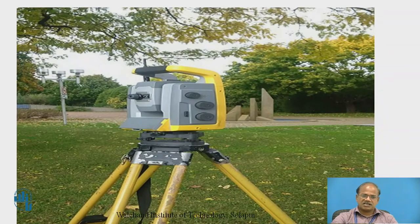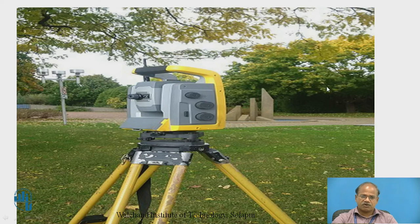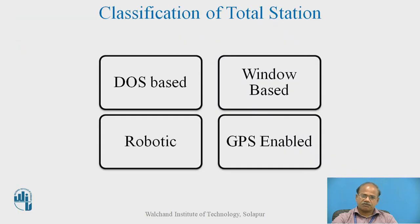This is one of the classical total stations in front of you — a Leica make instrument. As you can see, there is an eyepiece adjacent to which a focusing screw is also there, and from the opposite side there is transmission of the electromagnetic wave which is received back by the instrument. The rotation of this part is also possible, with the help of which we can even find out vertical distances.